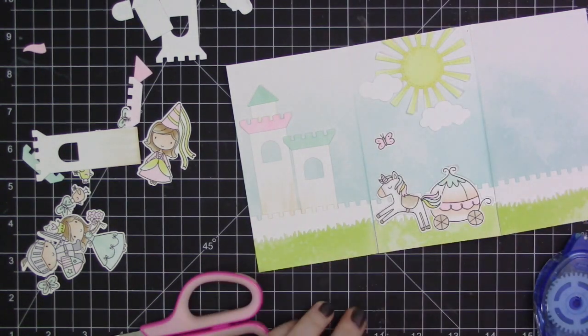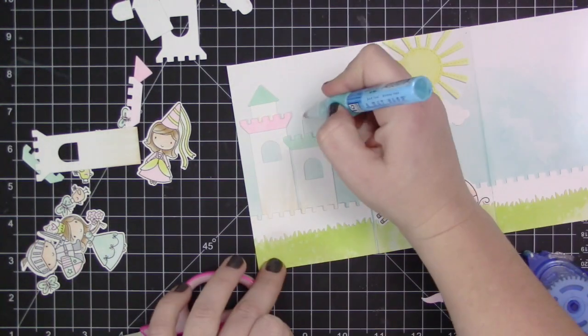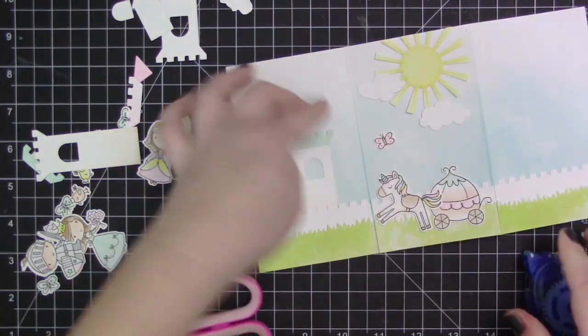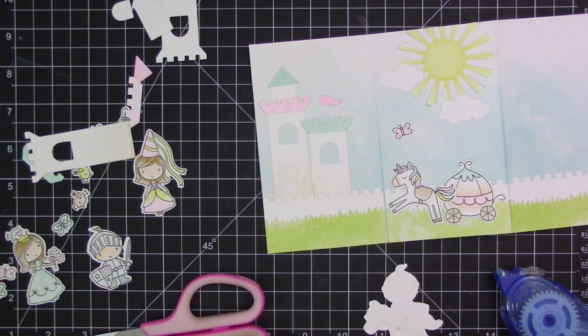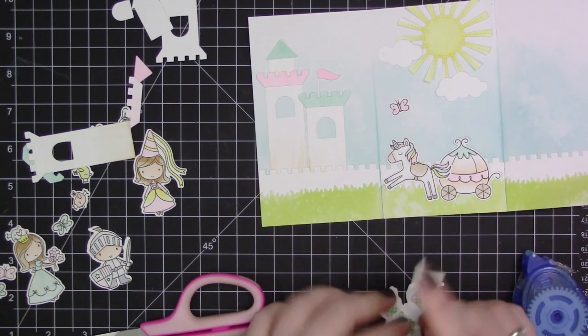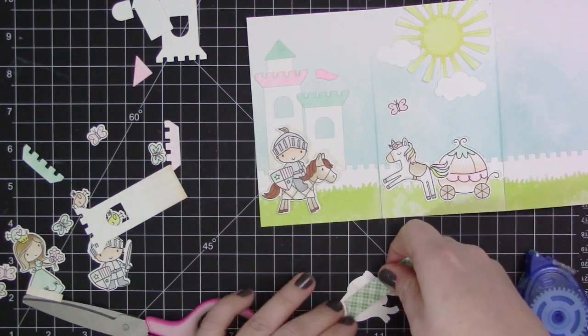But I decided to keep going and just see what would happen, and it actually worked out fine. The horse looks a little bit silly with the overlapping that I had to do there with the carriage. But for the most part it worked, and like I said I decided to keep it just to show that sometimes you make an oopsie and mess something up. But you can always salvage a card if you just kind of change the direction of how you were going to do things. So I just kept going here.